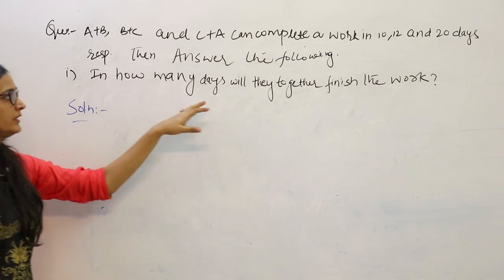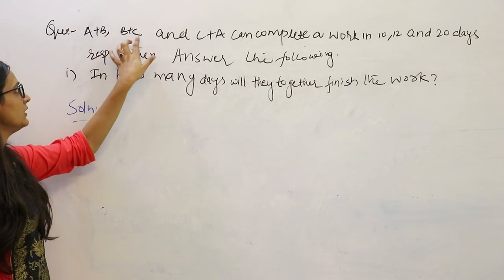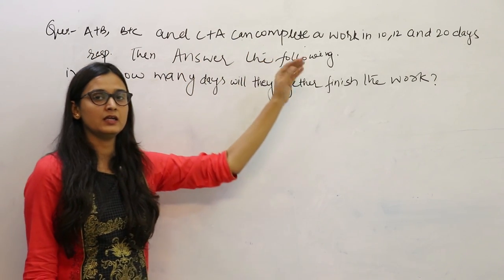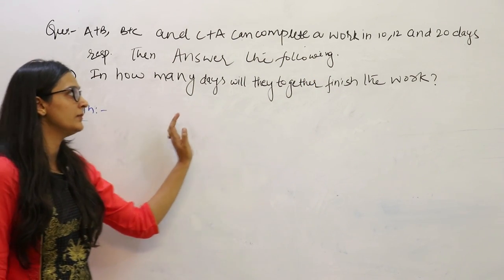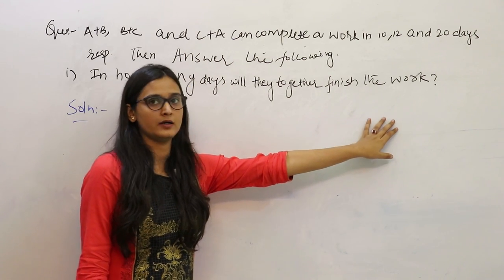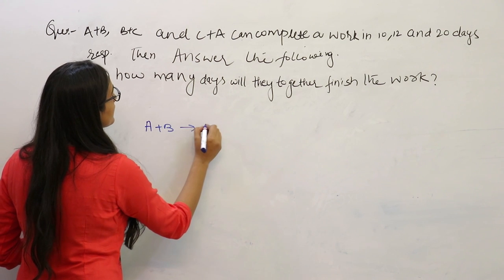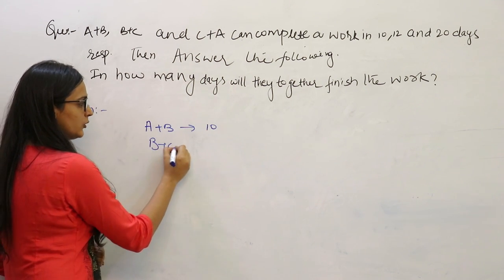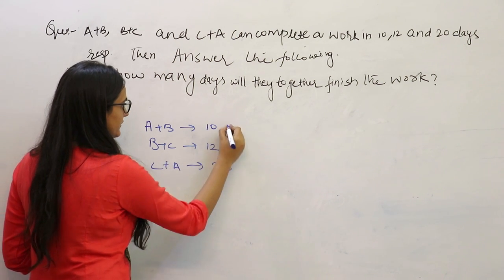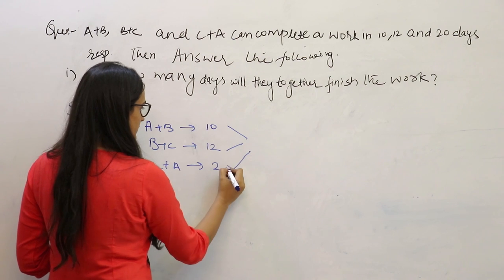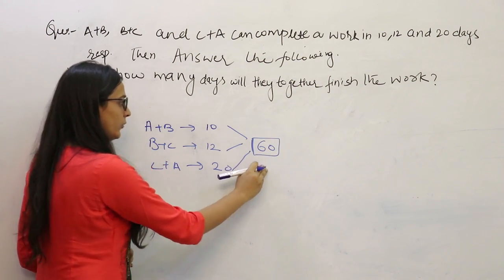What the question says: A+B, B+C, or C+A can complete a work in 10, 12, and 20 days respectively. We need to find in how many days all three together will complete the work. Take the LCM of 10, 12, and 20, which comes out to be 60. This 60 units will represent the total unit of work.